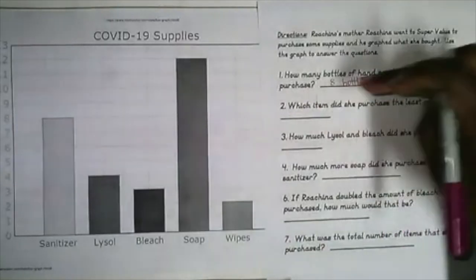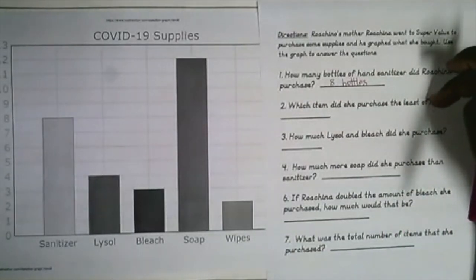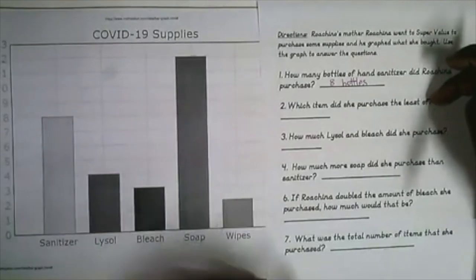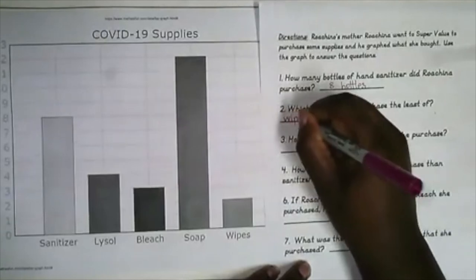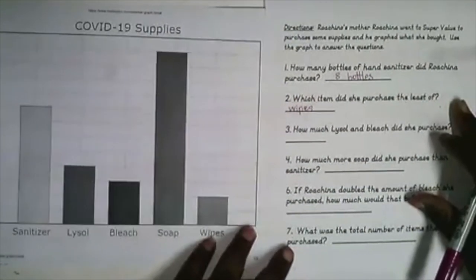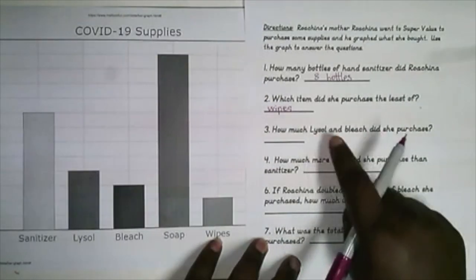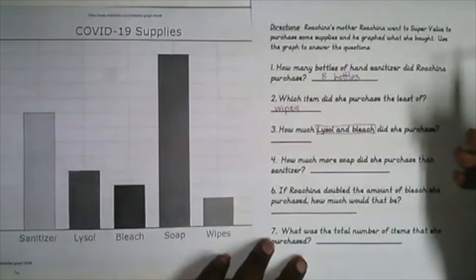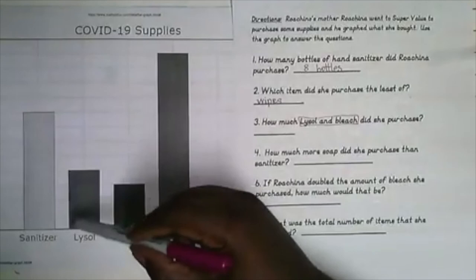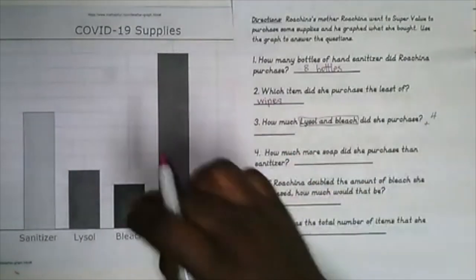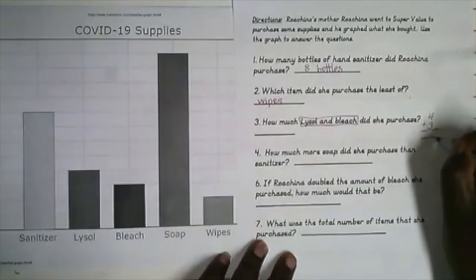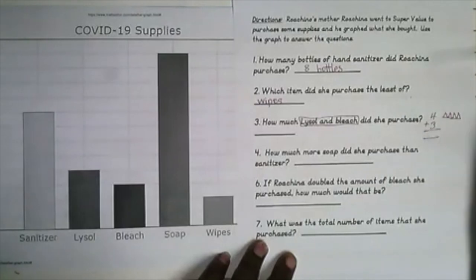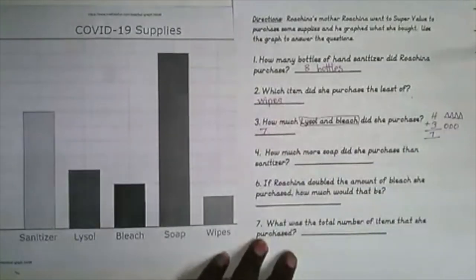Which item did she purchase the least of? We look for the shortest line — Lysol is four, bleach is three, wipes is two. So she purchased the least amount of wipes. Next question: how much Lysol and bleach did she purchase? Lysol is four plus bleach is three — four plus three equals seven. Seven Lysol and bleach items combined.